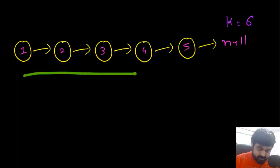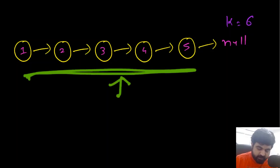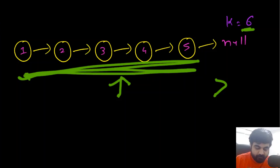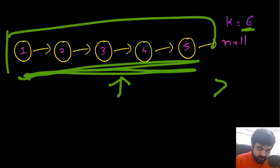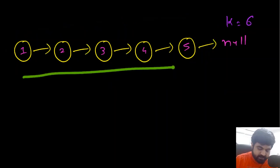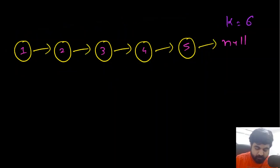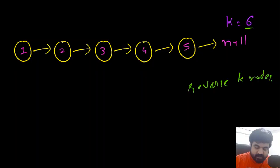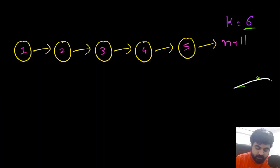The most basic thing we can do to solve this problem is first check for the edge case scenario where the given value of K is actually greater than the number of elements present inside our linked list. If that is the case, we don't need to modify the given input linked list and we can return the answer as it is. Since K is greater than the number of nodes present, there is no way to reverse all those nodes, which means we don't need to modify the answer at all.